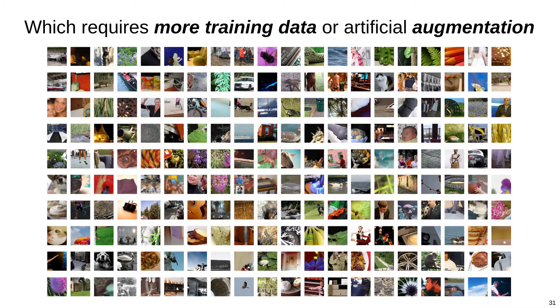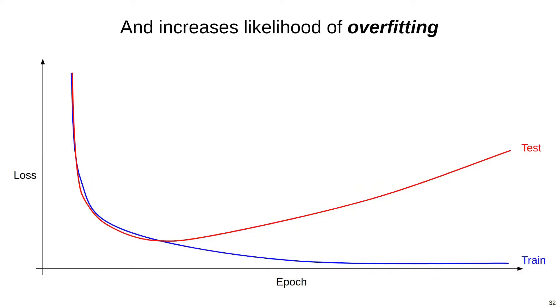Learning this kind of invariance requires complex networks and lots of training data, usually coupled with some form of artificial data augmentation. And all of this increases the likelihood that the network will overfit and fail to generalize.